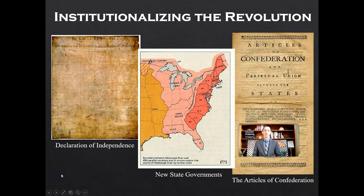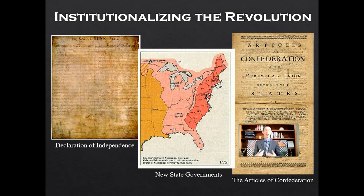We've looked at the causes of the American Revolution, what started it, and we've looked at the fighting. What about the changes? By its very definition, a revolution is a violent upheaval of the status quo. Revolution is meant to bring changes. So how much change did the revolution bring? To answer this question, we will look at three things: the Declaration of Independence, the new state governments, and the first constitution of the United States, the Articles of Confederation.